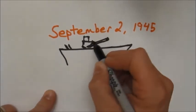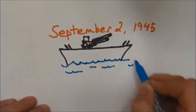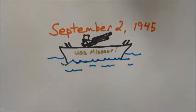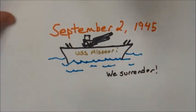On September 2nd, 1945, aboard the USS Missouri, the Japanese signed an official surrender to the United States.